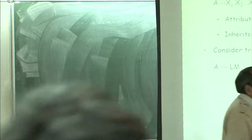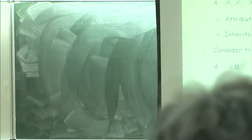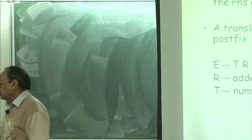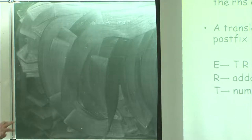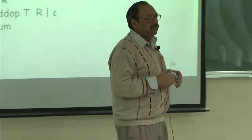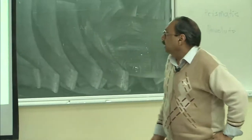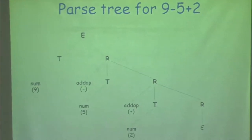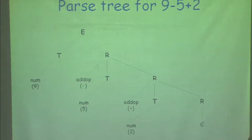Good afternoon. To recapture what we were discussing in the previous class, we started looking at L-attributed definitions and once we introduced L-attributed definitions, we also introduced translation schemes where we said that the code need not be at the end of any rule and we can embed the code anywhere in the right hand side. We then looked at positioning of the code, saying that the code should be evaluated in a position so that we have all the attributes required to evaluate it.